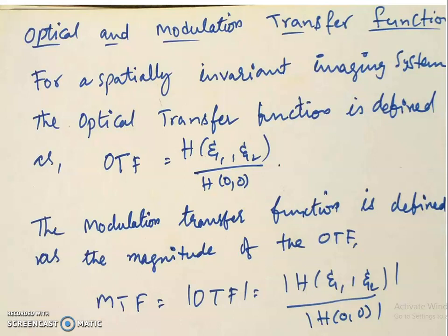The definition for optical transfer function is as follows. For a spatially invariant imaging system, the optical transfer function is defined as: OTF equals H of ζ₁, ζ₂ divided by H of 0, 0, where H of ζ₁, ζ₂ is the Fourier transform of the impulse response of the system H of m, n. The modulation transfer function is the modulus of the OTF, which is modulus of H of ζ₁, ζ₂ divided by modulus of H of 0, 0.